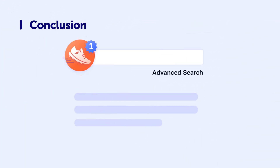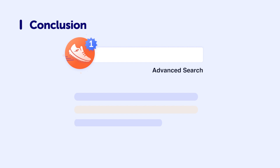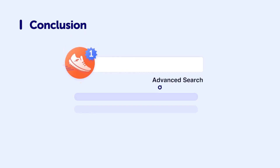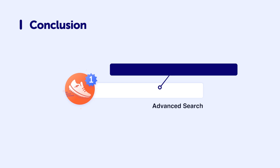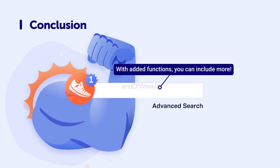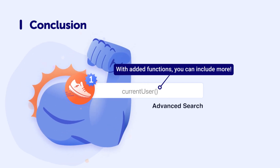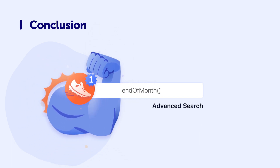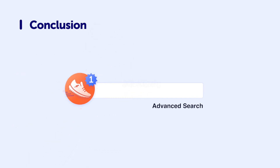The ability to use CQL in your Confluence searches is an invaluable tool for making your search more specific and accurate. With added functions, you'll be able to include more in your searches. For additional help with functions and how to use them, please refer to Atlassian's advanced searching with CQL documentation.